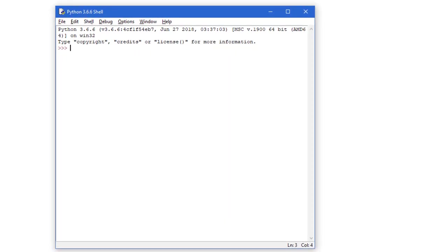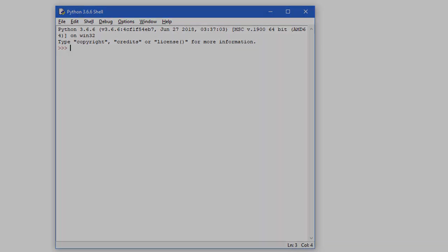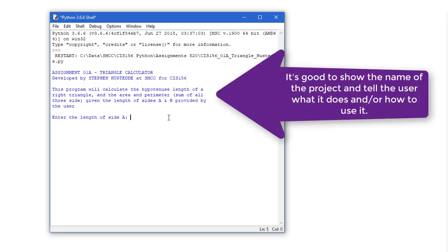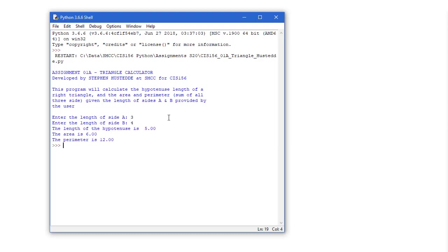Here then is my triangle calculator project running in the Python IDLE editor. I am asked to enter the length of side A. So the traditional example is if side A is 3 and B is 4, then side C should be 5. And I'm told the length of the hypotenuse is 5.00. We're going to do this in two decimal places. The area is 6. 3 times 4 is 12, and take half of that is 6. And the perimeter is 12. 3 plus 4 plus 5.